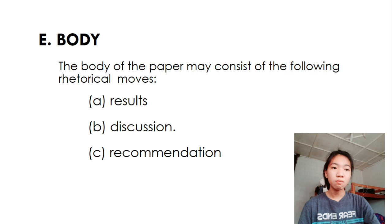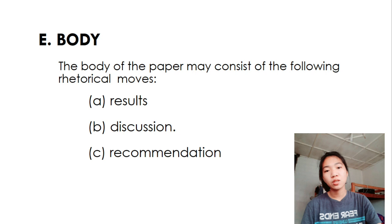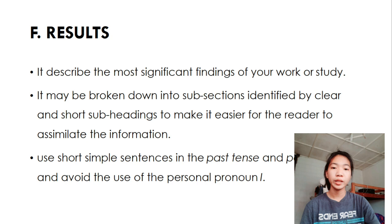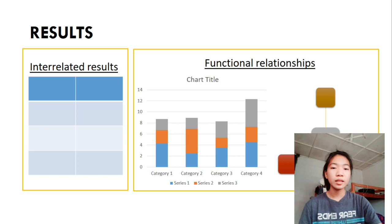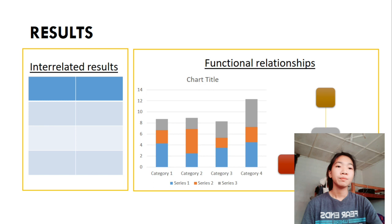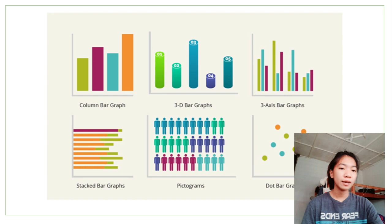And for the body, the body of the paper may consist of the following rhetorical moves: the result, discussion, and recommendation. And for the results, it describes the most significant findings of your work or study. It may be broken down into subsections identified by clear and short subheadings to make it easier for the reader to assimilate the information. Use short, simple sentences in the past tense and passive voice and avoid the use of the personal pronoun I. You can express the results through interrelated results and functional relationships. Example: column bar graph, 3D bar graphs, 3-axis bar graphs, stock bar graphs, pictograms, and dot bar graphs.